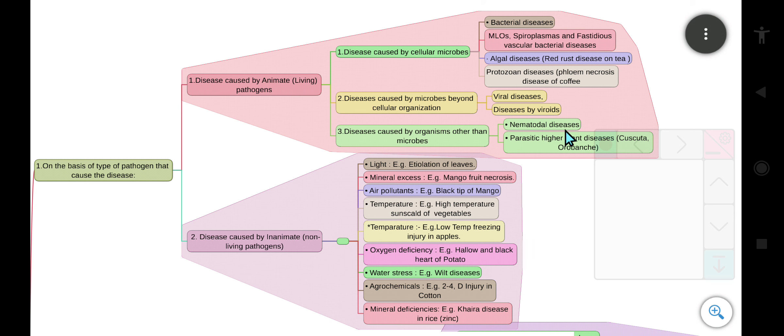The third one is caused by organisms other than microbes. In this, nematodal diseases and parasitic higher plant diseases take place. The example of this is Cuscuta or orobanche.